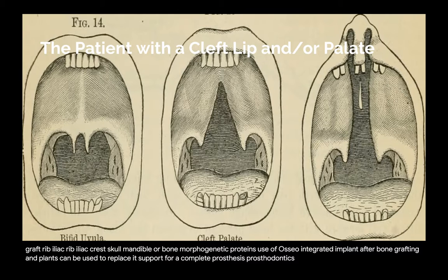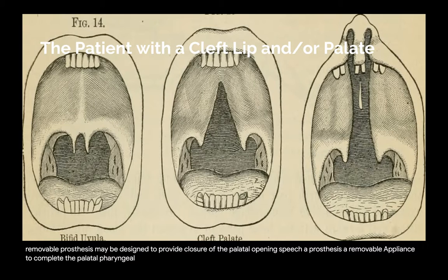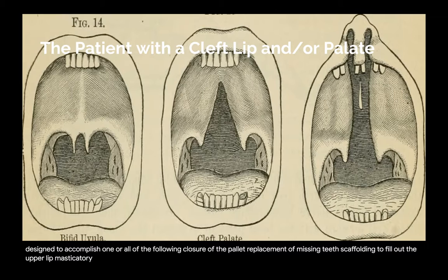Prosthodontics — types of appliances. An obturator is a removable prosthesis designed to provide closure of the palatal opening. A speech aid prosthesis is a removable appliance to complete the palatal pharyngeal valving required for speech. Purposes and function of a prosthesis may include closure of the palate, replacement of missing teeth, scaffolding to fill out the upper lip, masticatory function, restoration of vertical dimension, and serving as a post-orthodontic retainer.